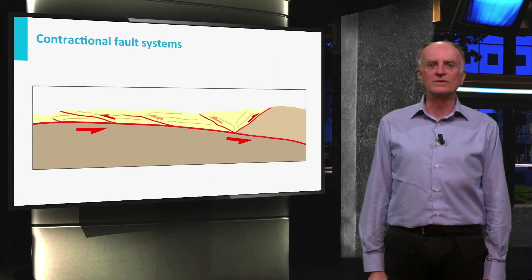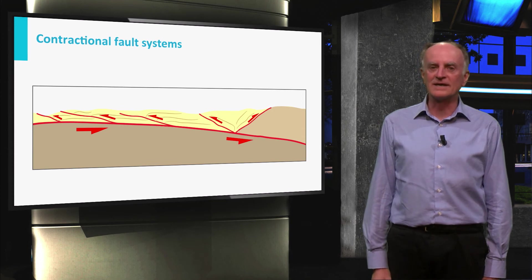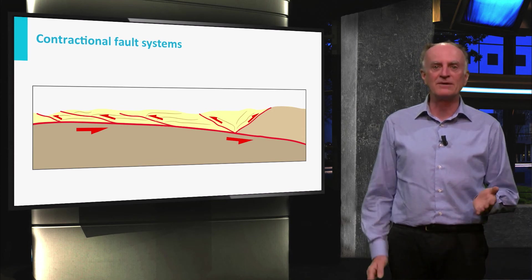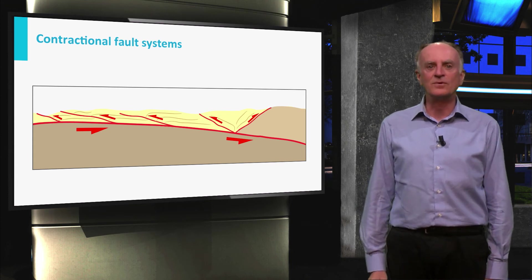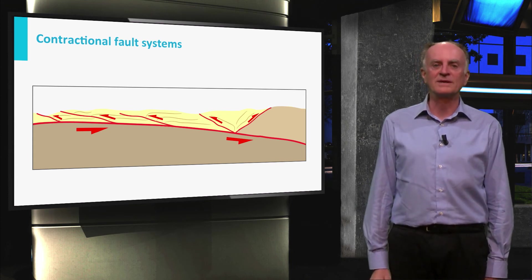Associations of shortening faults and the related folds are typical for the external zones of mountain belts forming fold and thrust belts. We will see more of this when discussing the formation of mountains.